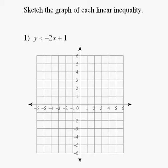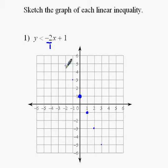This one right here has a y-intercept of 1 and a slope of negative 2, so that's like negative 2 over 1. I'm going to go down 2 and right 1 — that's where my slope is. I'll put a few more points: down 2, right 1, down 2, right 1, a couple of them up here just to make it easier.